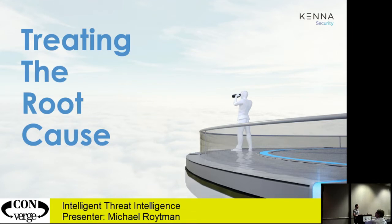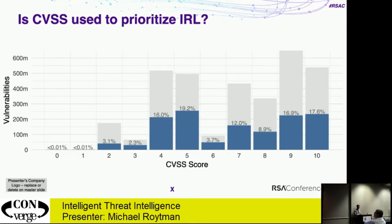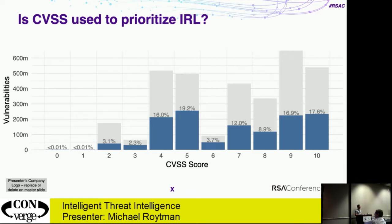Let's talk about how we figure out what we should be remediating. Today we use CVSS. You've probably seen charts of CVSS by vulnerability, but what you have not seen is what it looks like in actual customer environments. Take 4.6 billion vulnerabilities, group them by CVSS scores — you've got 650 million CVSS-9 vulnerabilities and about 540 million CVSS-10 vulnerabilities. The dark blue represents those that actually have an exploit or have seen a successful exploitation. If your process is to remediate CVSS-10 vulnerabilities, only 17.6% of those out in the wild are ones an attacker actually cares about. The other 80% are a waste of your time.